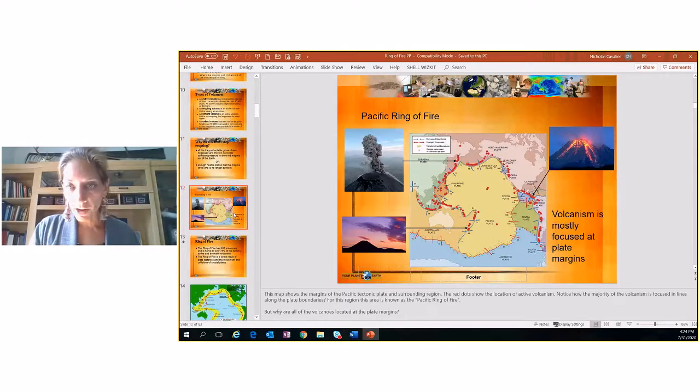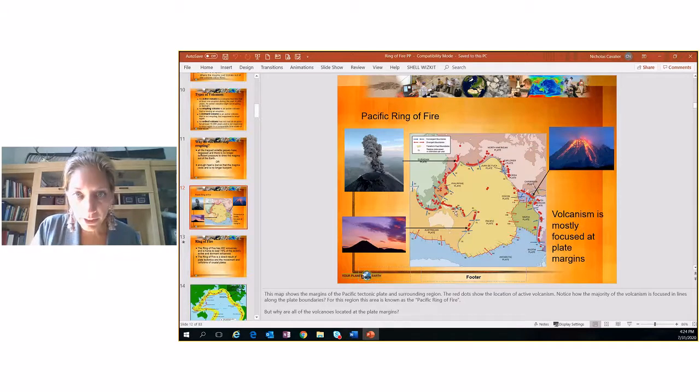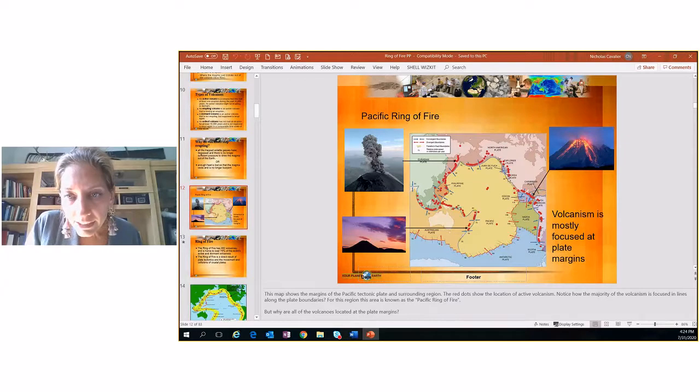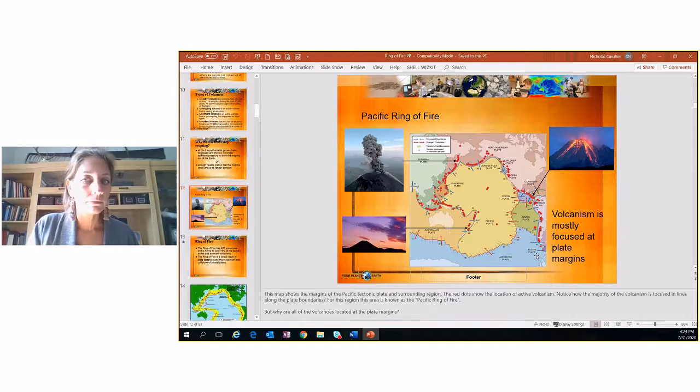Pacific Ring of Fire. Here we have a map of the Pacific Ring of Fire. You can see it down here. Over here is Australia. You got Russia over here. You got Alaska. Working down to the United States and Chile over here. So you can see the Ring of Fire works this way, this way. And all these little red dots are volcanoes along the Ring of Fire. And here's some pictures of some volcanoes.